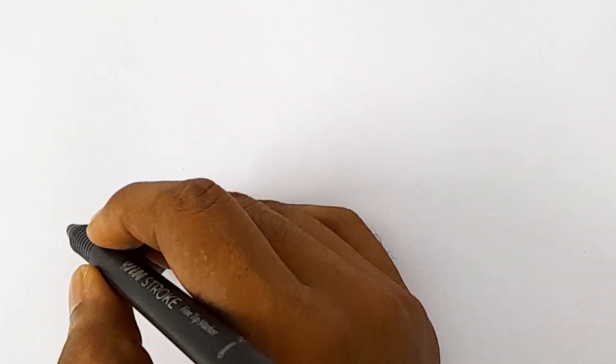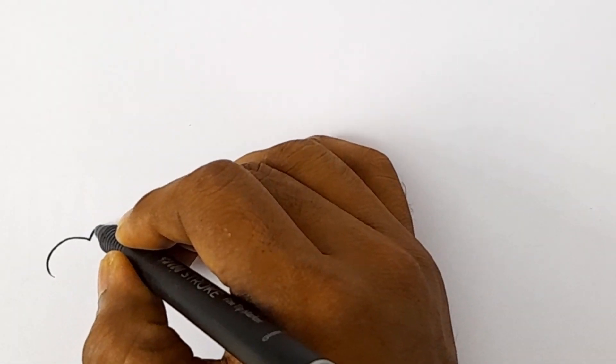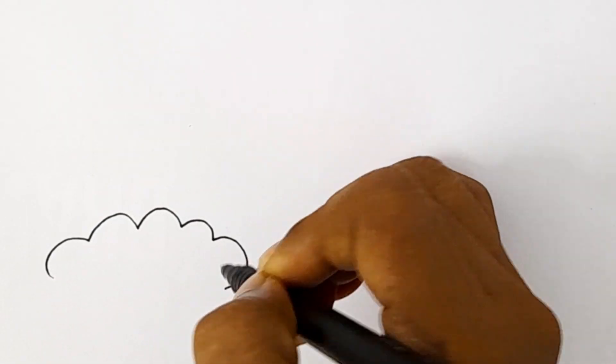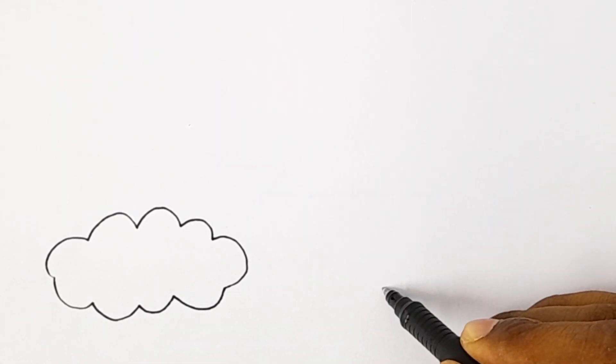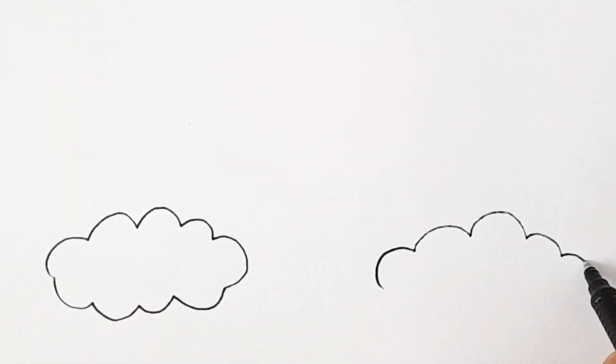Hello little friends, today we are drawing and painting a rainbow puppet, so let's start to draw. At first we are drawing the cloud.